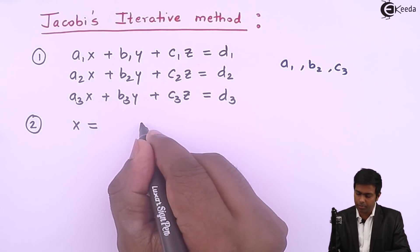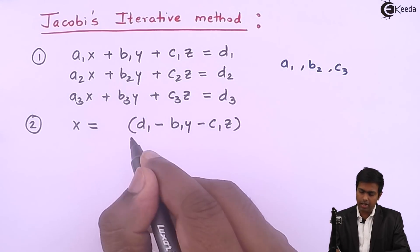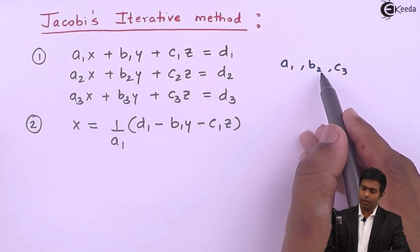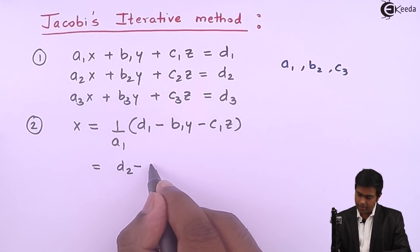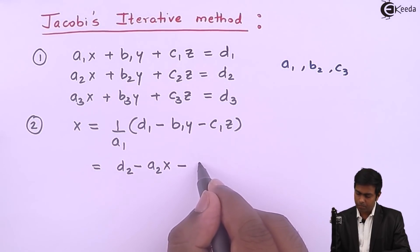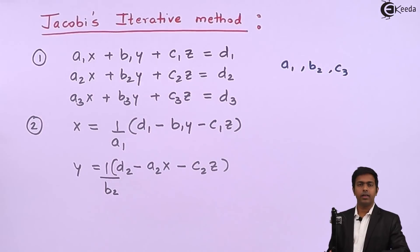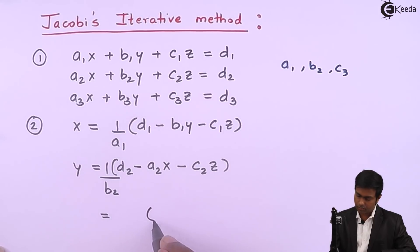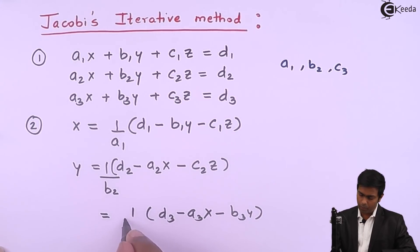We rewrite the first equation as: x = (1/a1)(d1 − b1y − c1z). Next, to bring b2 into the denominator: y = (1/b2)(d2 − a2x − c2z). And for z, with c3 in the denominator: z = (1/c3)(d3 − a3x − b3y). So now we have expressions for x, y, and z.